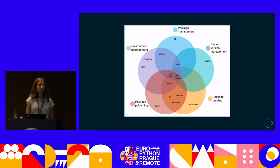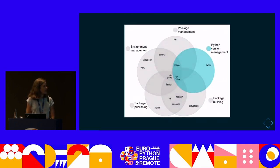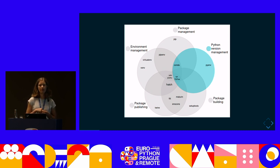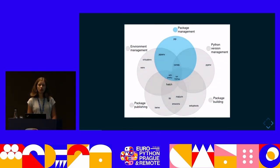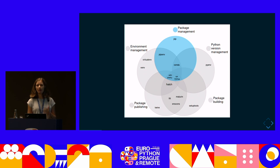As a short introduction to each category: say you have a personal project that supports several Python versions — you need to install and switch between Python versions. That's what the first category, Python version management, is about. There is one very popular single-purpose tool, pyenv, but also some other tools. Then, your project usually has dependencies — your code depends on other packages. For this you need package management. Very popular is pip, which you've probably all used before to install or upgrade packages.